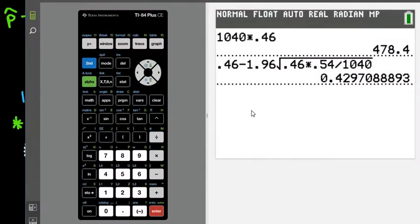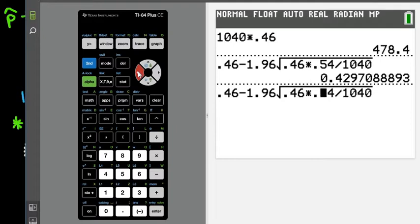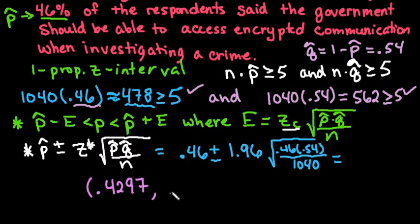After you've put it into your calculator, now we need to do the plus. For me, instead of having to retype all of this, I'll hit second enter and it'll retype exactly what I have. Then I'll just arrow over to the minus sign and change it to plus. I don't have to retype everything, and I can just write down 0.4903 as my upper limit.